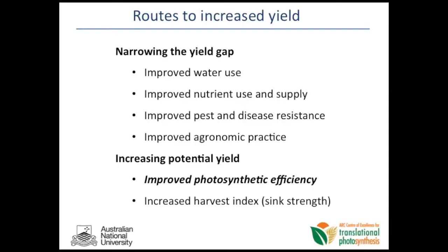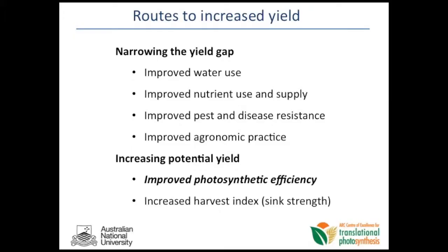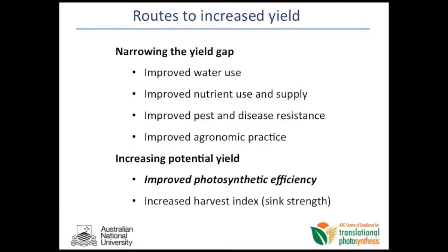So what are the routes to increasing yield? There are two obvious routes you can exploit. One is narrowing the yield gap — the difference between what can actually be achieved under optimal conditions versus what is actually achieved in the field under existing agronomic practices. You can do things like improving water use, improving nutrient use and supply, improving pests and disease management, and improved agronomic practice. But that's just to get you up to the yield potential. You can also take approaches that increase the yield potential itself, and the two most significant ones are improving the photosynthetic efficiency and increasing the harvest index.